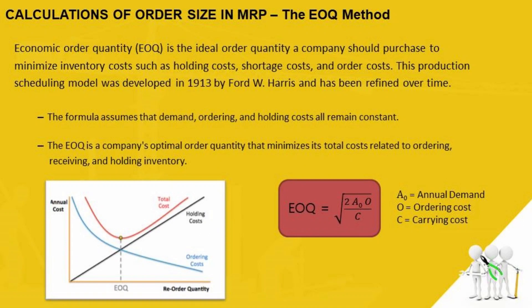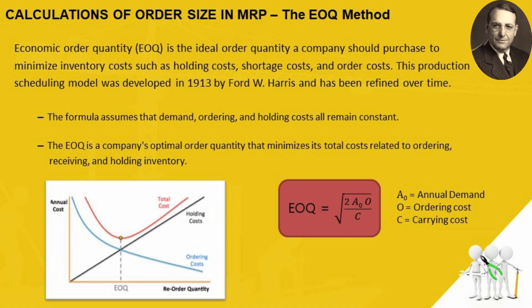To understand the EOQ method of order size calculation, we need to understand its background. The Economic Order Quantity, or EOQ, is the ideal order quantity a company should purchase to minimize inventory costs such as holding cost, carrying cost, shortage cost, and order cost. This production scheduling model was first developed in 1913 by Ford W. Harris and has been refined over time.